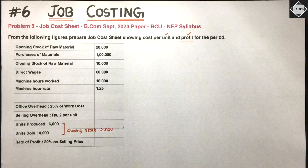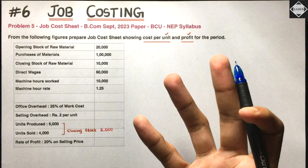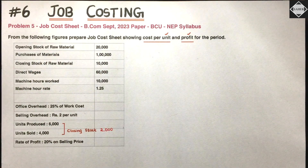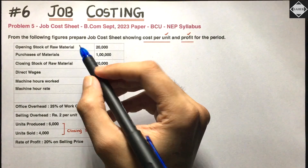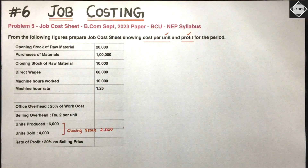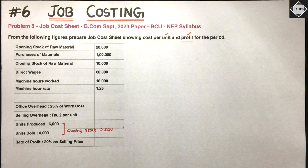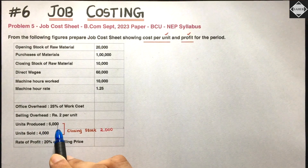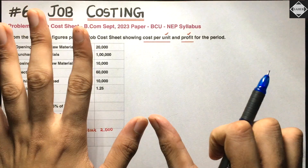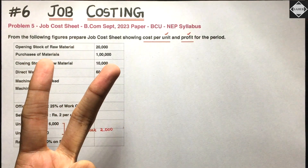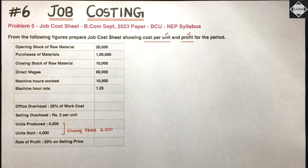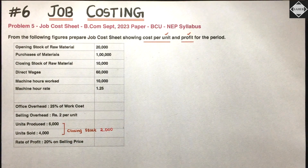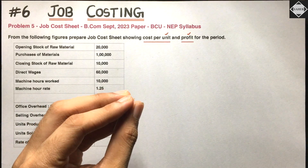Now understand why I have taken this question. Usually in job costing they give simple sums, but here they have given us opening stock and closing stock of raw material — that's one thing. Second, they have given us closing stock of finished goods. Units produced are 6000 and units sold are 4000, so the remaining 2000 units are still with us — that's closing stock of finished goods. These two adjustments make our job cost sheet format a little lengthy.